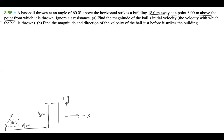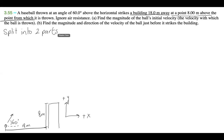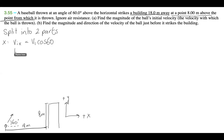When we write down our x and y knowns and unknowns, we can figure out what we're solving for. For the x component, we have vi_x = vi·cos60, and we don't know the time. There's no acceleration in x, so it's just v, t, and d. We know dx = 18 meters.